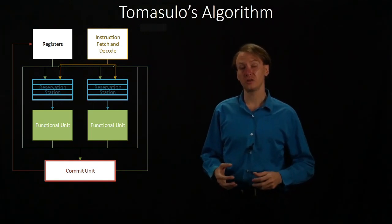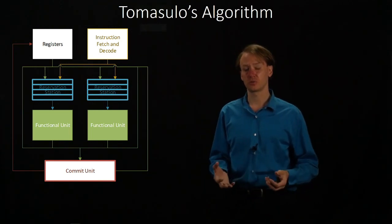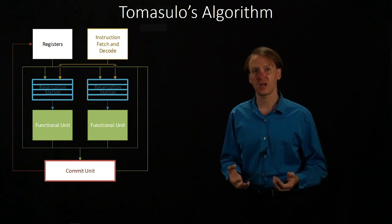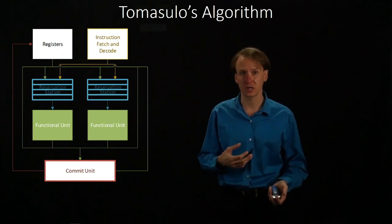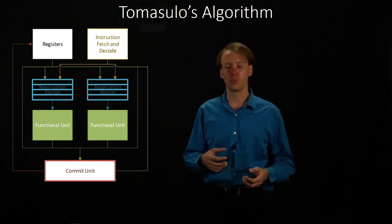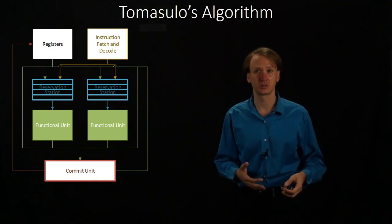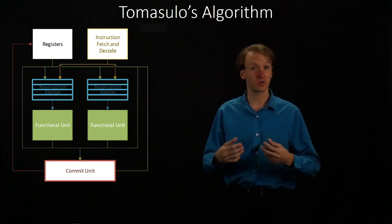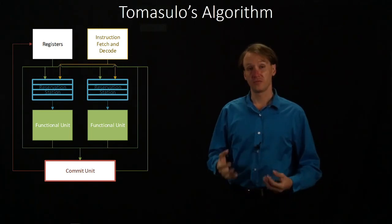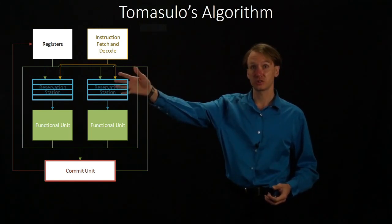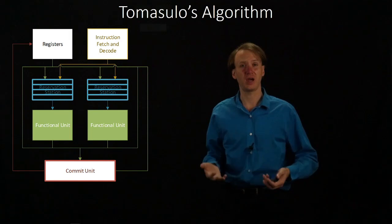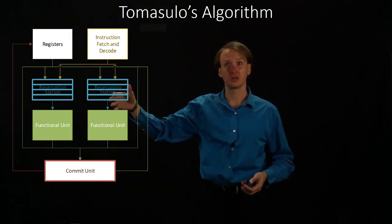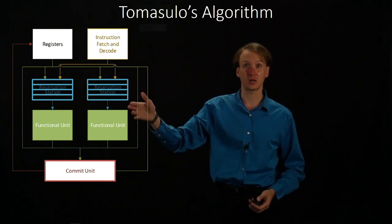Put together, these mechanisms allow us to avoid all of the hazards that we could potentially have without any real effort. We're not going to need any special hardware for forwarding or keeping track of when instructions are writing to registers. Some hazards will be handled just by the commit unit committing things in order. The forwarding will be replaced by the reservation stations waiting for their data to be available — instead of immediately grabbing things out of the registers, they sit around waiting for data to come around on this bus.